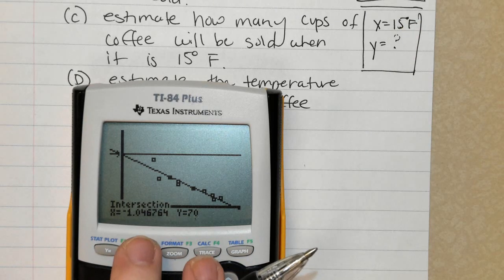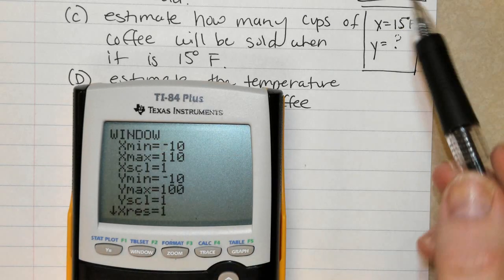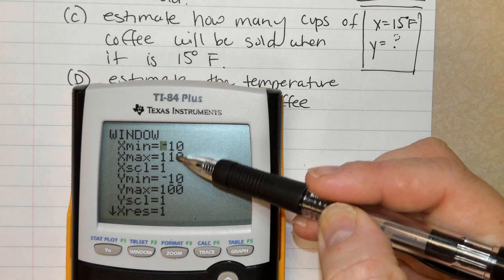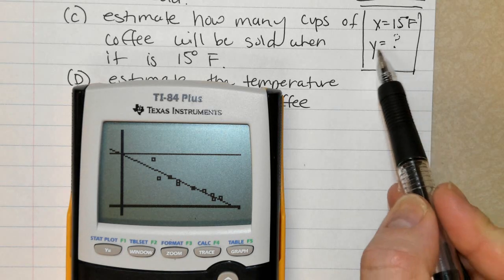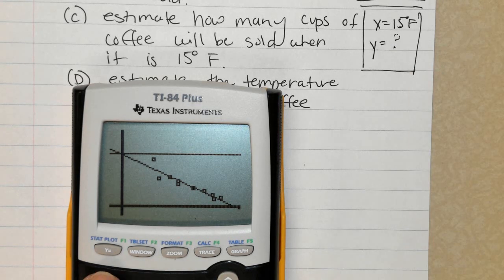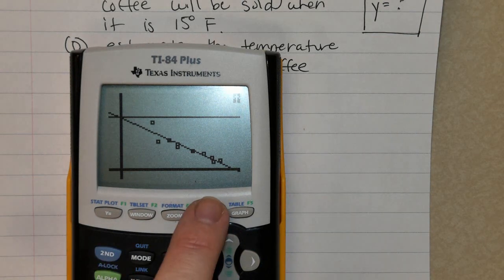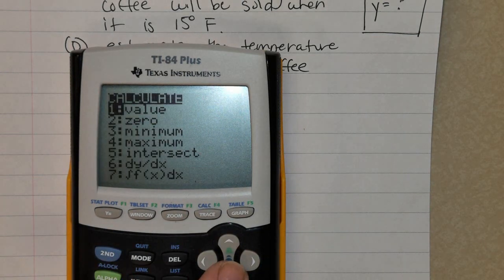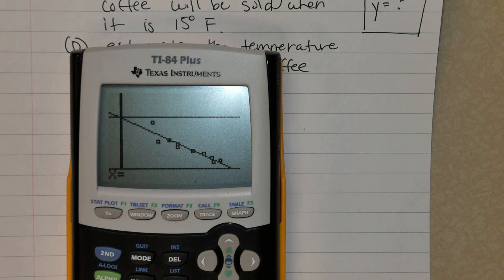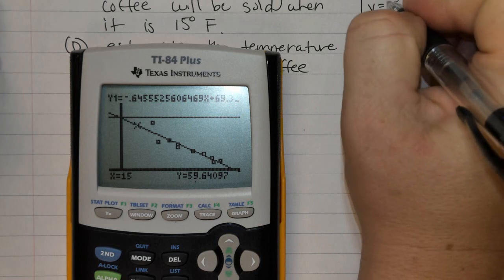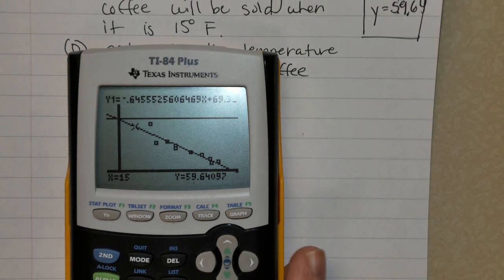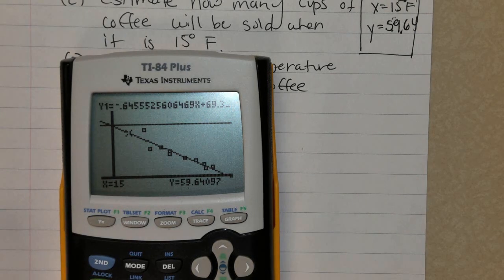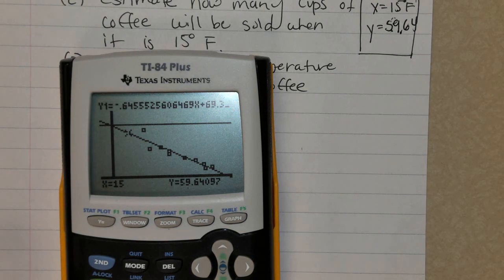Is 15 in between these two numbers? It is. Okay. So I went back to graph, and now to find out that Y value, hit Second. Trace. Value will always come up. Hit Enter and type in 15. When it is 15 degrees outside, we can estimate that approximately 60 cups of coffee will be sold.